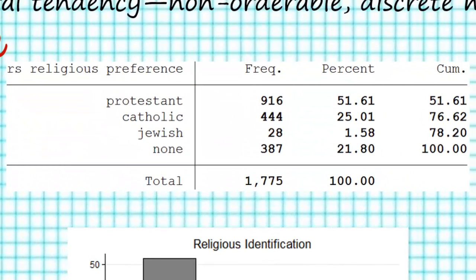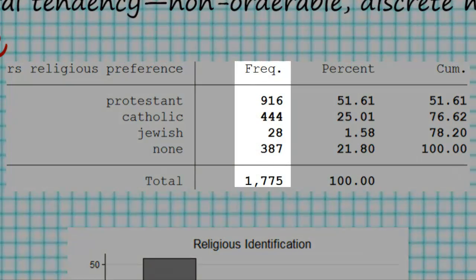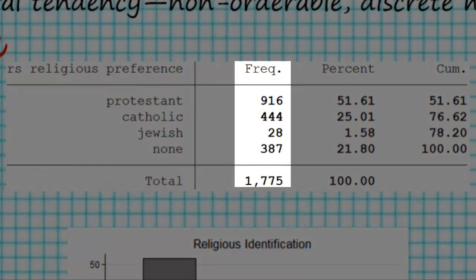Looking at the top of this slide, you can see there are two other ways that we can determine the mode. First, we can look at the column labeled FREQ, or frequency, and simply select the category that has the greatest number of cases. In this case, there are 916 Protestant respondents, which exceeds all of the other categories.